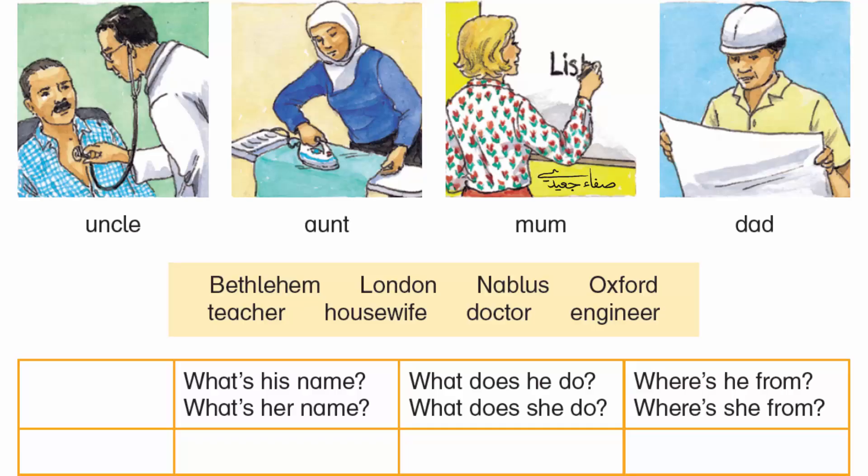Fiona: What's your mum's name? What does she do? Where's she from? Fiona: What's your dad's name? What does he do? Where's he from?